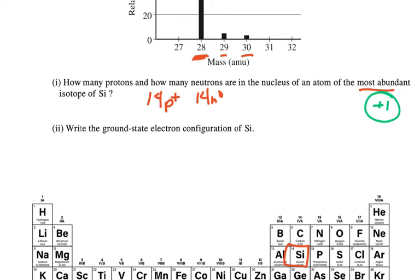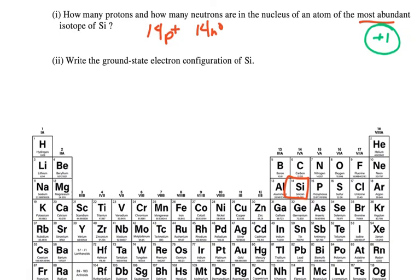Now we want to write the ground-state electron configuration for this. Here's silicon, and I like to use the periodic table as my guide. So I can see that it's going to be 1s2, 2s2, 2p6, 3s2, 3p2.